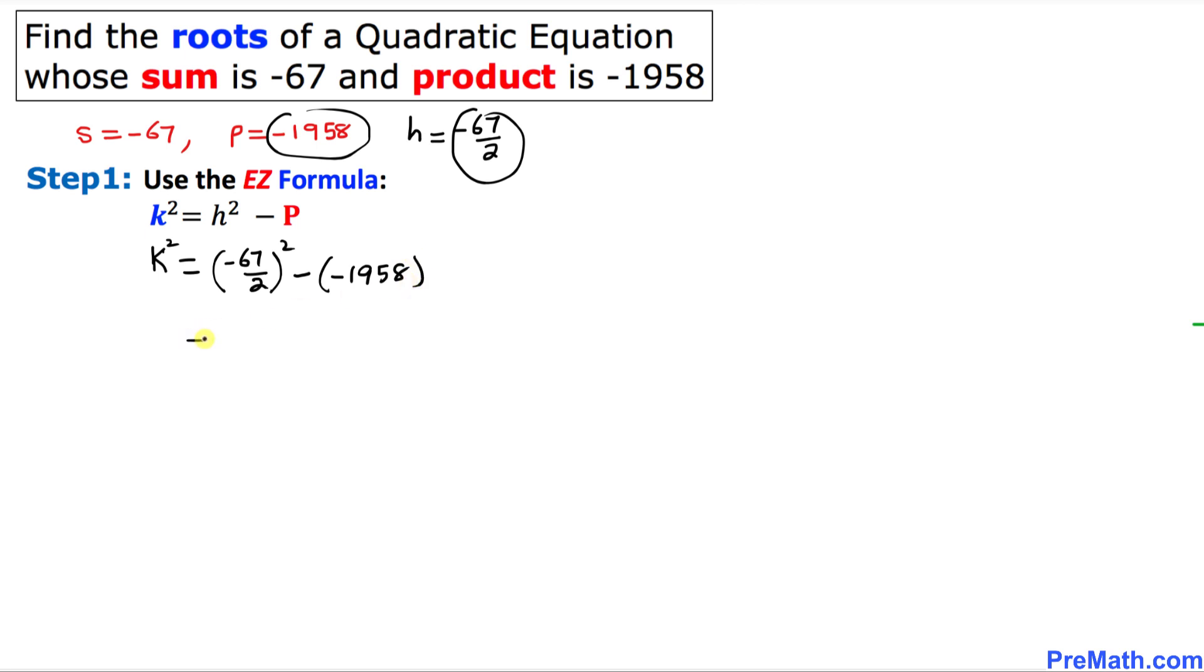Let's simplify furthermore. Negative 67 divided by 2 squared is going to be positive 4489 divided by 4. And over here negative and over here negative become positive 1958. And if I put 1 underneath that's going to become a fraction as well. Let's add these two fractions and I'm going to show you an easy way to add these fractions. Let's crisscross.